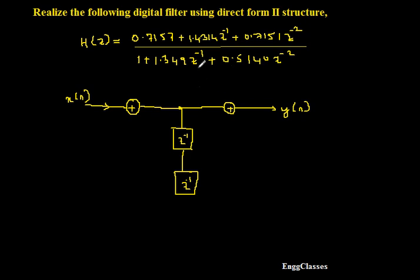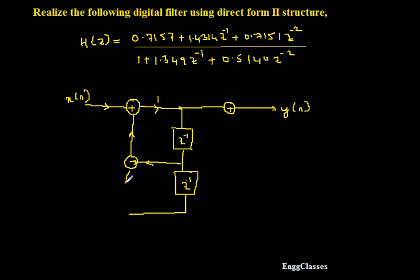Here, x(n) gets multiplied with the term 1. Whatever is in the denominator I will consider on the left-hand side, and the numerator terms I will write on the right-hand side. After each z^-1 delay element I will place an adder, adding the respective signals together. Similarly for the last element, I will add those two signals as well.